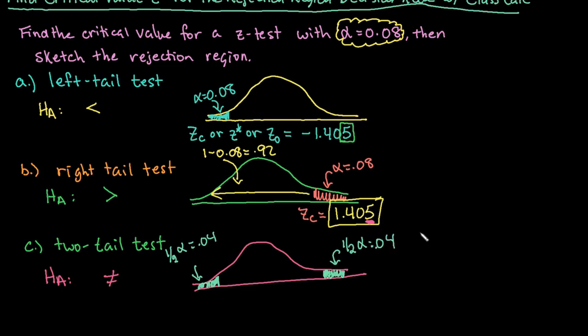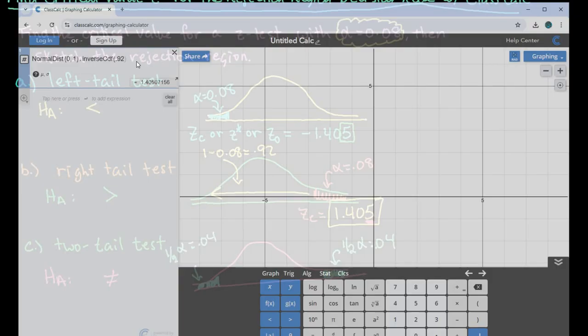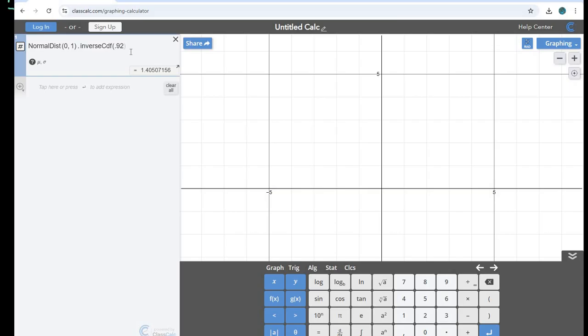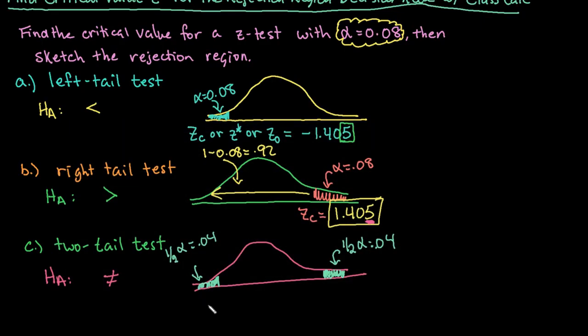And it doesn't matter which one that you find. I can either type in 0.04 to get the negative critical value, or I can type in 1 minus 0.04, which is 0.96, and that would give me the positive critical value. Typically, I just find the negative one because it's easier. So if I just go in here and I plug in 0.04, I get negative 1.75. And since the third decimal place on this one is a zero, I would just keep it to two decimal places.